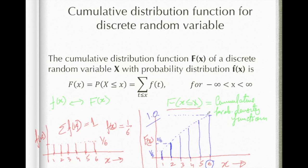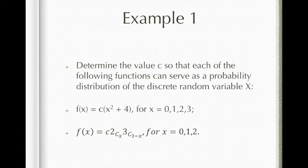These things will be more clear when we solve some examples. Determine the value of c so that each of the following functions can serve as a probability distribution of the discrete random variable x. The condition is that the summation of all probabilities over the domain of x must equal one, and every probability must be greater than or equal to zero. Imposing these conditions, we can find the value of the given constant c in the equation.